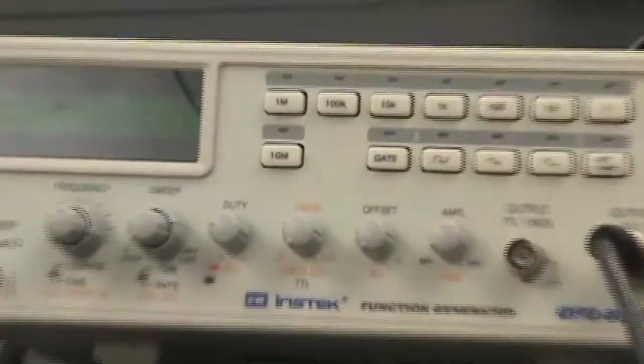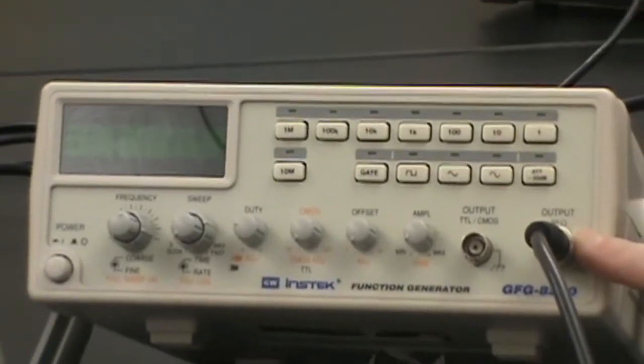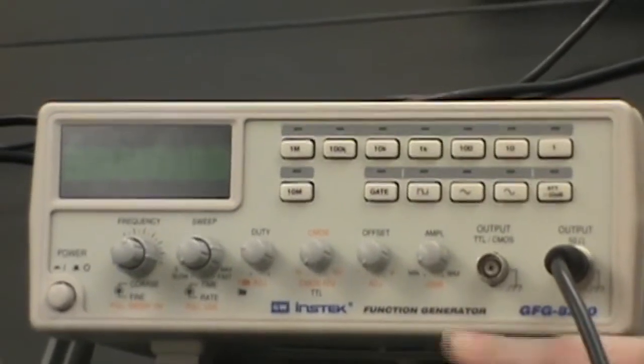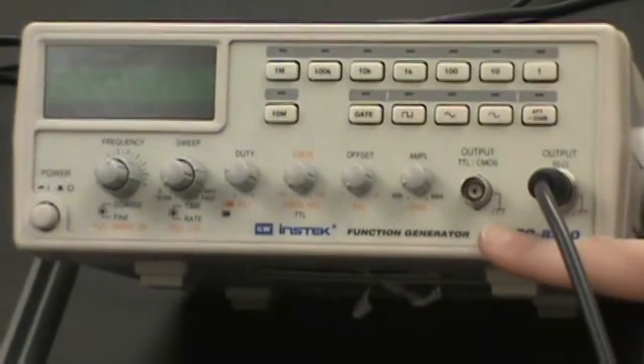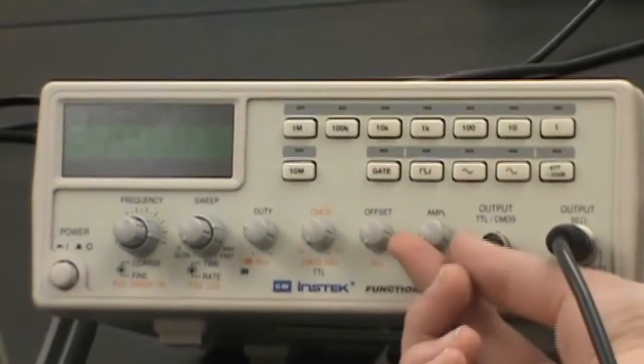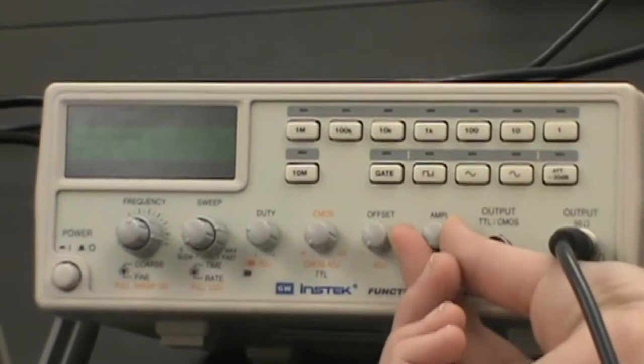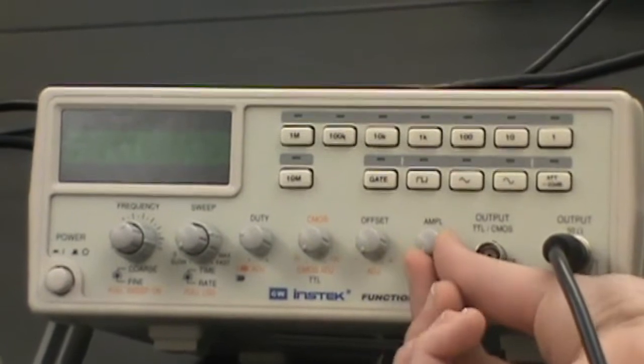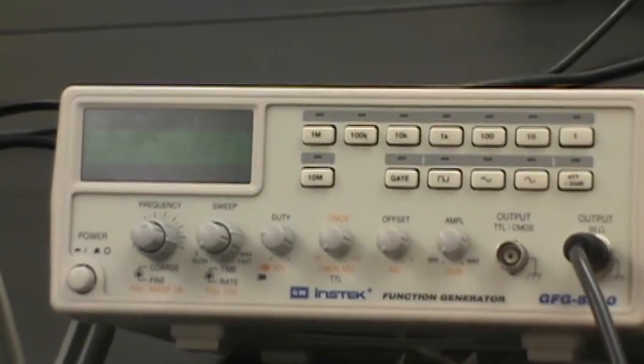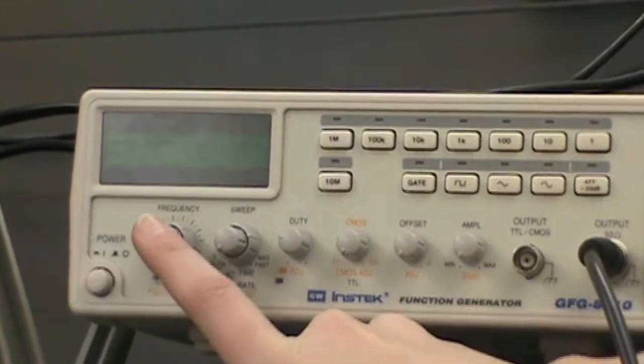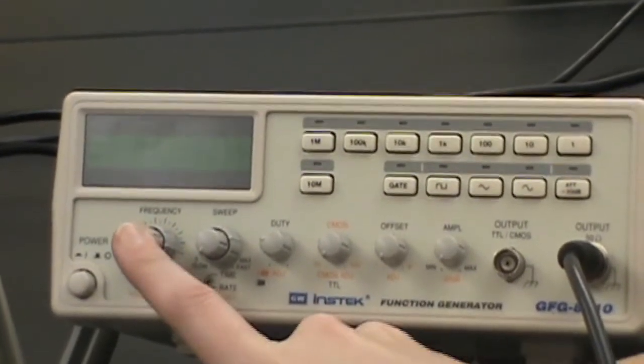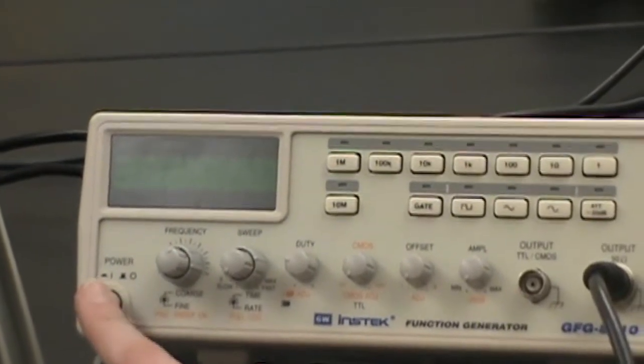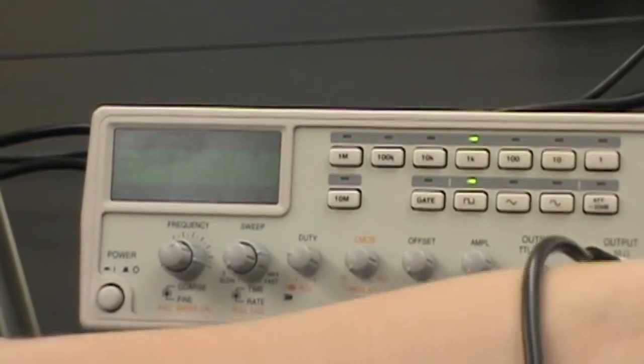Use the output on the function generator labeled 50 ohms. Do not use the output TTL CMOS, that's a different type of output. Turn the amplitude knob all the way to minimize when you first connect to your function generator, just to make sure that it minimizes the voltage going to your oscilloscope. Make sure your frequency knob is all the way pushed in by pushing down on it. Then power on your function generator and the oscilloscope.